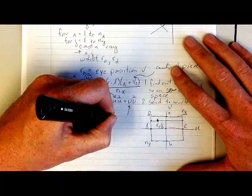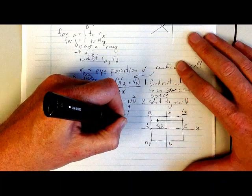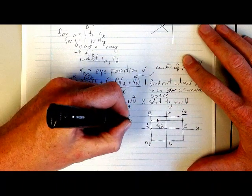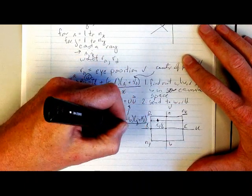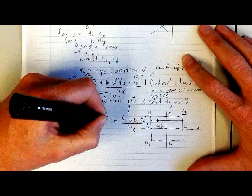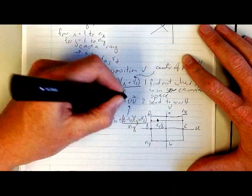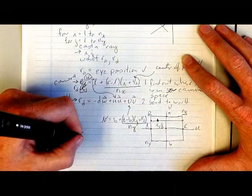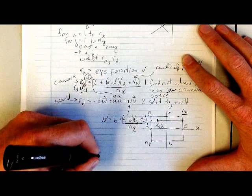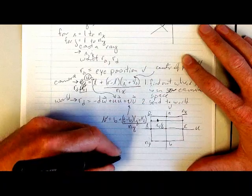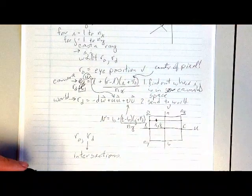So the next thing we're going to do is we're going to send that to world space. So this is the ray direction in camera space. And now we're going to get the ray direction in world space. So the ray direction in world space is equal to negative D times W, which is a vector.